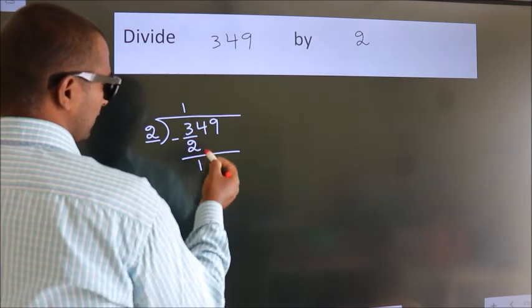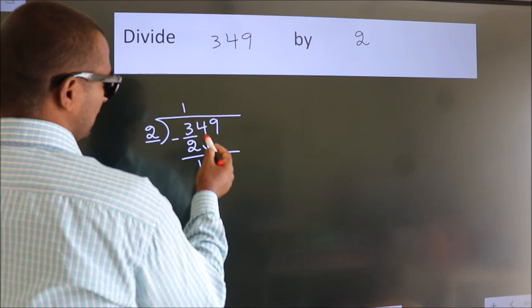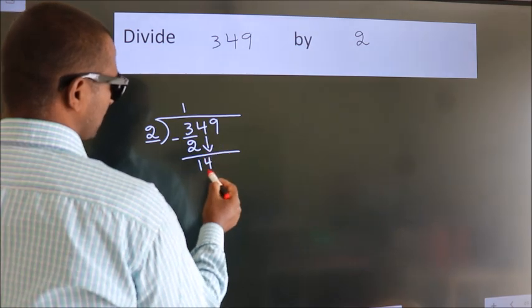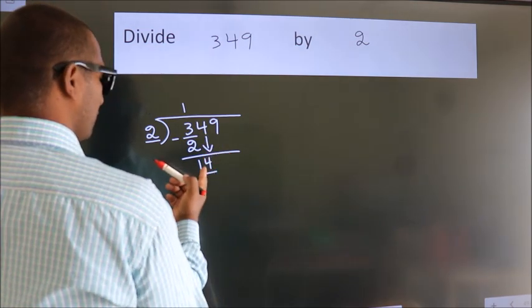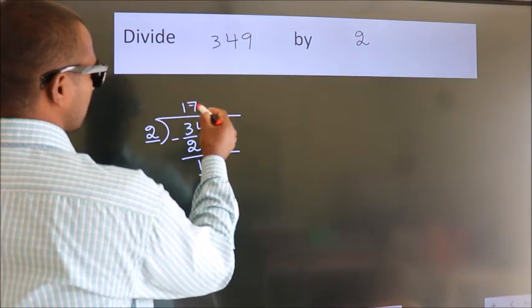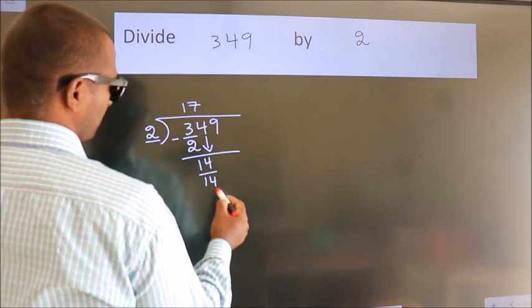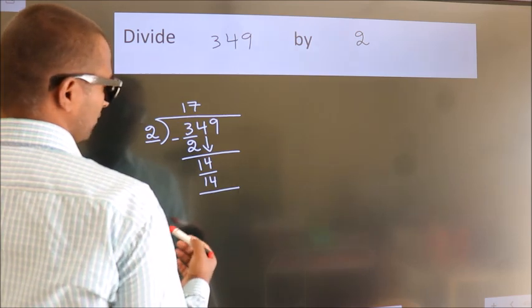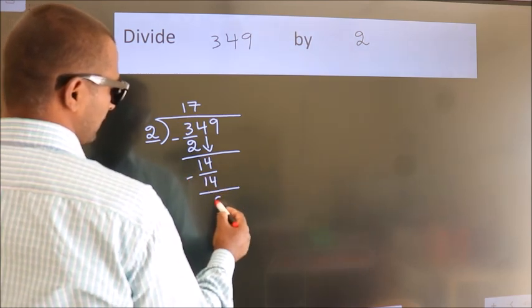After this, bring down the next number, so bring down 4, giving us 14. When do we get 14? In the 2 times table, 2 times 7 equals 14. Now we subtract and get 0.